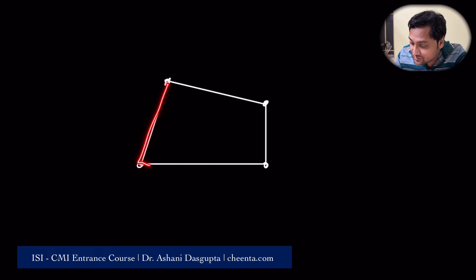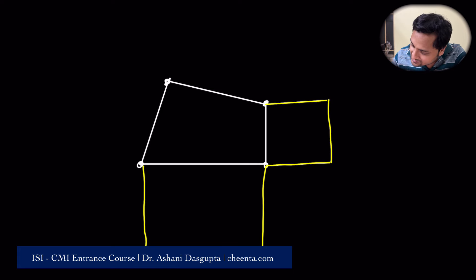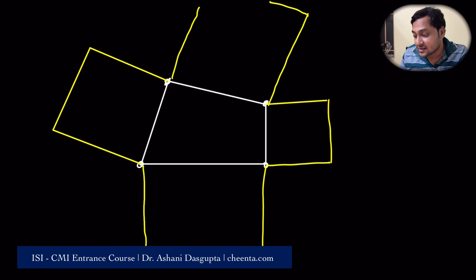It says that we have a quadrilateral ABCD and we draw four squares. So, for example, a square like this, a square like this, a square like this. We are drawing four squares on the four sides of the quadrilateral. One important data that is given to us is that the angles of the quadrilateral, let's say this is A, this is B, this is C and this is D, the angles are less than 180 degrees. All the angles are less than 180 degrees. This means this is a convex quadrilateral.